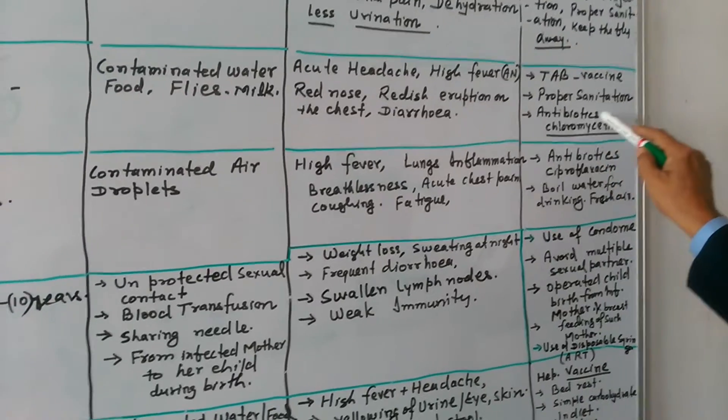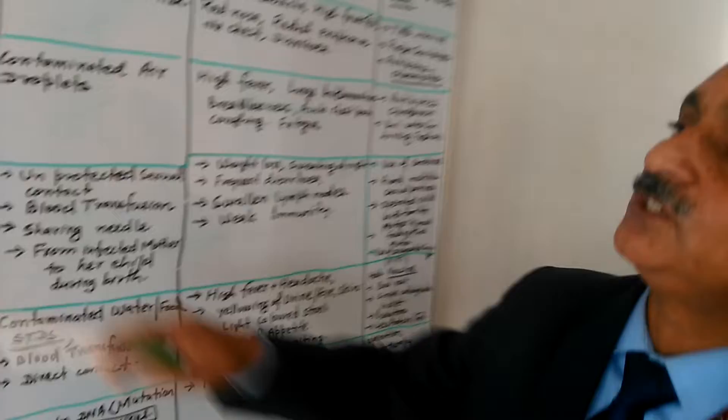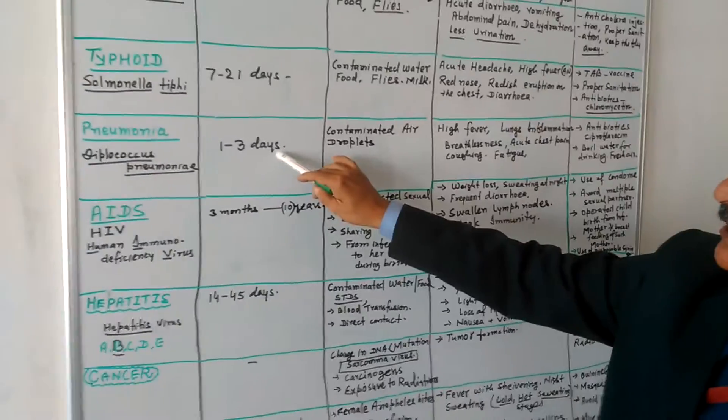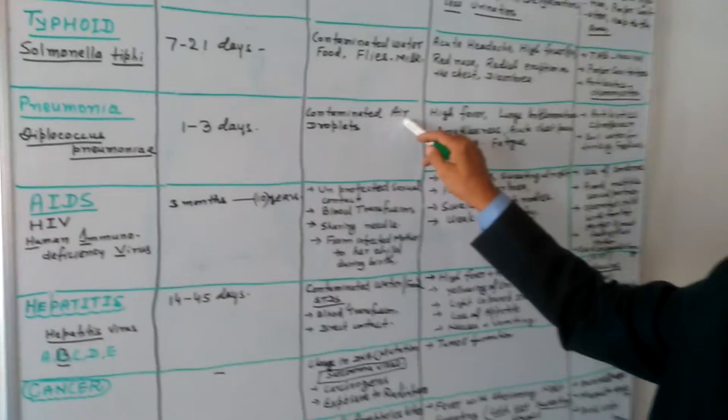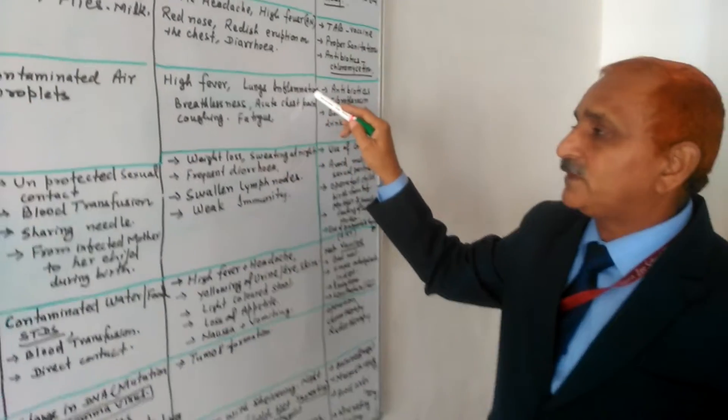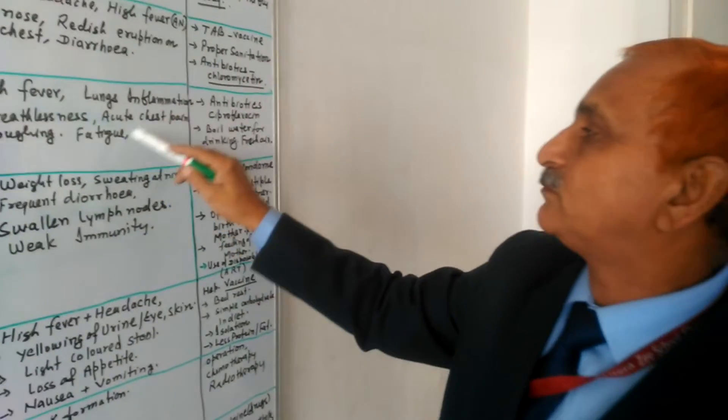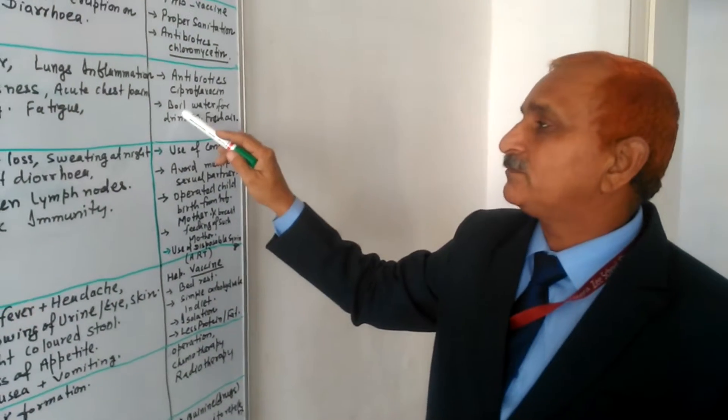Proper sanitation and antibiotics like chloromycetin can be used. Pneumonia, next. One to three days, we have contaminated air and air droplets. High fever, lung inflammation, breathlessness, acute chest pain, cough and fatigue are the symptoms. Antibiotics, ciprofloxacin, boiled water for the drinking and fresh air should be breathed.